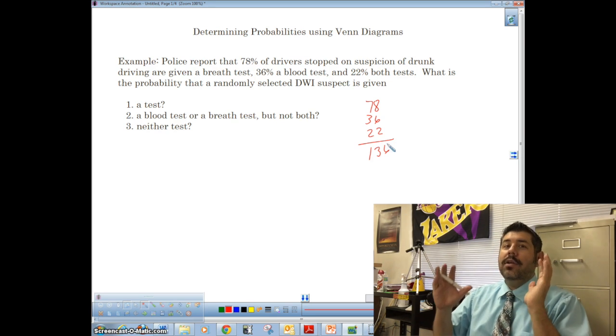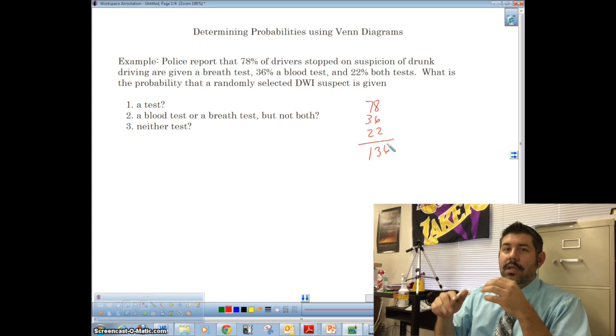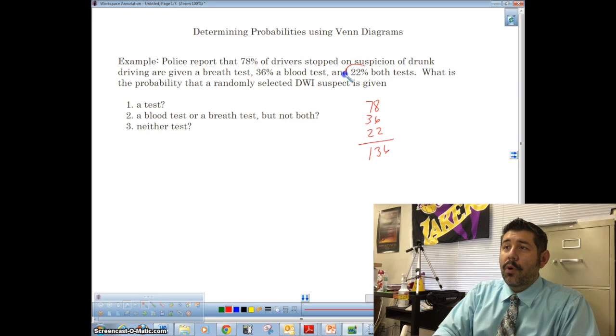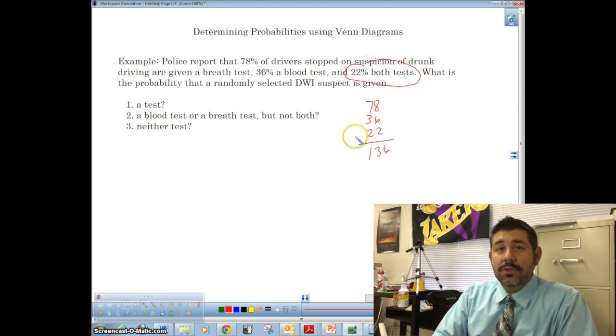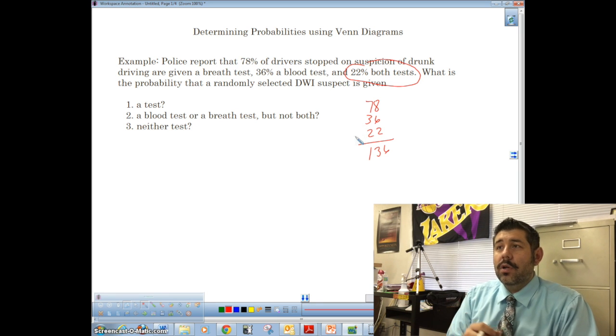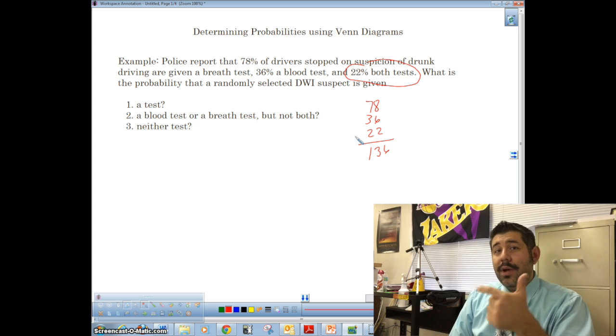So you're looking at this, maybe think yourself, wait a minute, how can these add over 100%? Well, they don't really, because we have an intersection of the two. We have this case that both tests are 22%. So what we need to do is we have two events going on, we have blood test, and we have breath test.